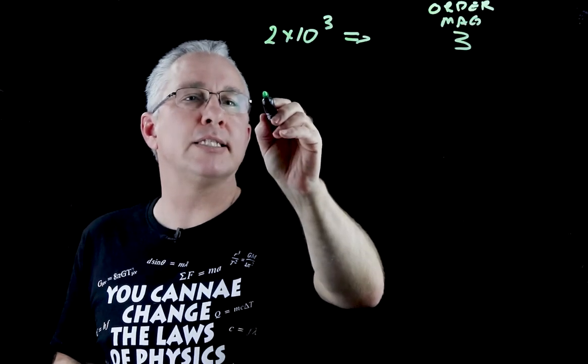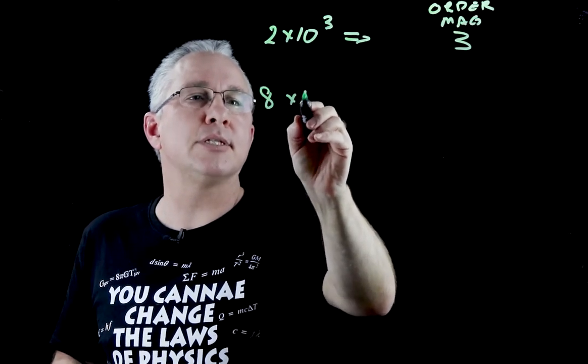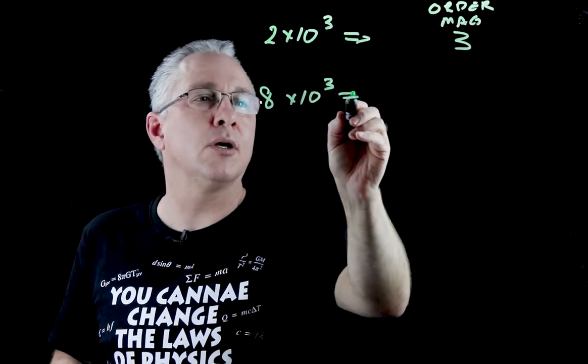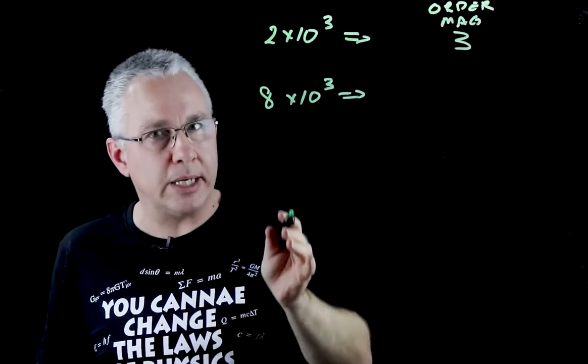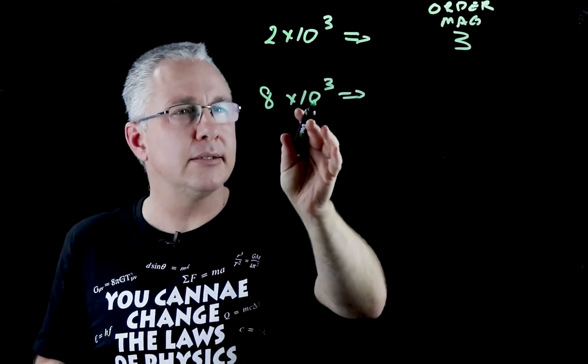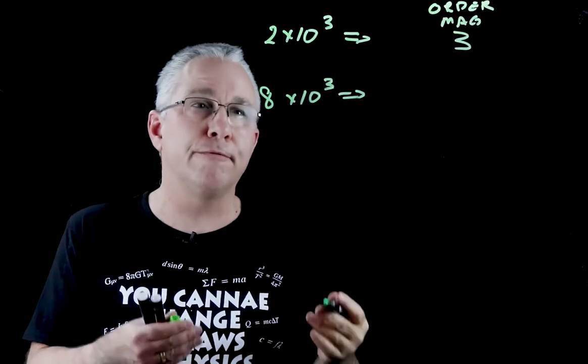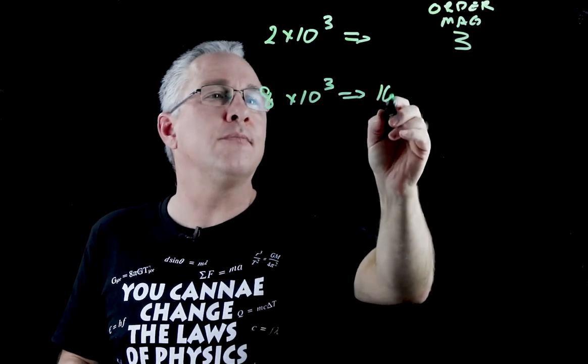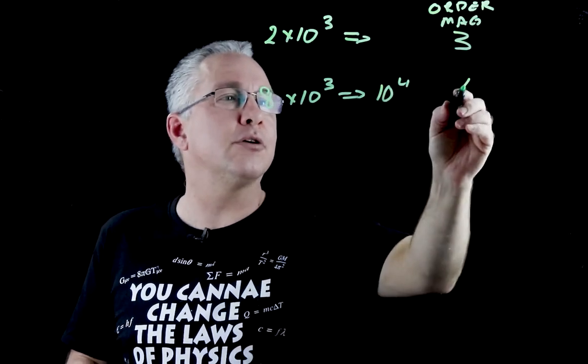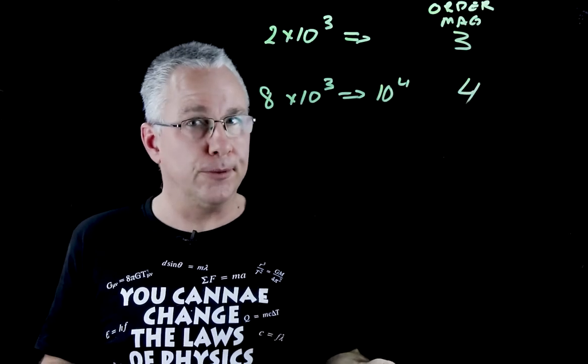What if I now have let's say 8 times 10 to the power of 3? Well the first thing you'd say, oh isn't that 3? But hold on, this is 8 times 10 to the power of 3, so we're getting closer and closer to 10,000, which is 10 to the power of 4. Therefore this is approaching the order of magnitude of 4.